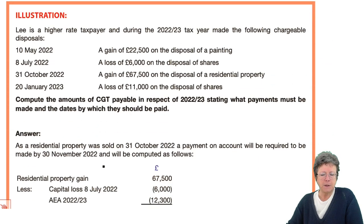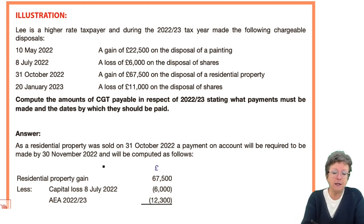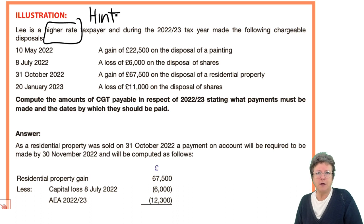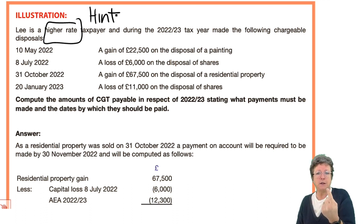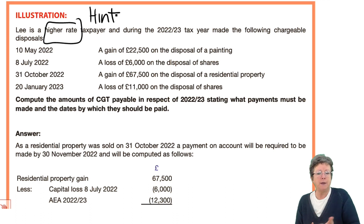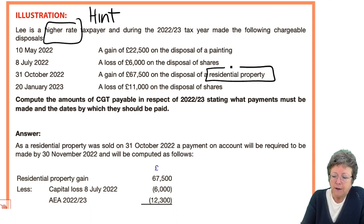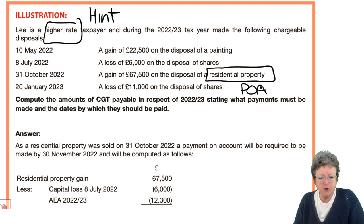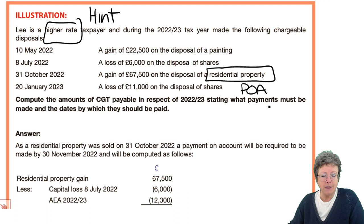There's an illustration here. Lee is a high-rate taxpayer — big hint: don't spend time working out how much basic rate band is left. He's a high-rate taxpayer so it's either 20% or 28%. He made the following disposals: May 2022 — gain of £22,500 on disposal of a painting. A loss of £6,000 on shares in July. In October — a gain on a residential property, so payments on account are due. Then a loss on the sale of shares in January.